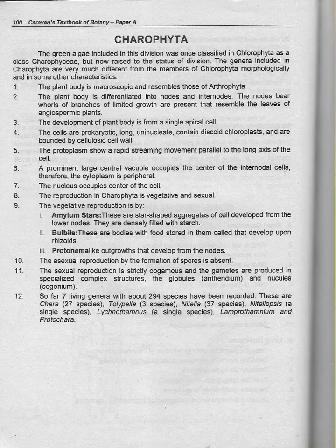Number 7: The nucleus occupies the center of the cell. Number 8: The reproduction in Charophyta is vegetative and sexual. Number 9: The vegetative reproduction is by amylom stars, bulbils, and protonema. Amylom stars are star-shaped aggregates of cells developed from the lower nodes, densely filled with starch.